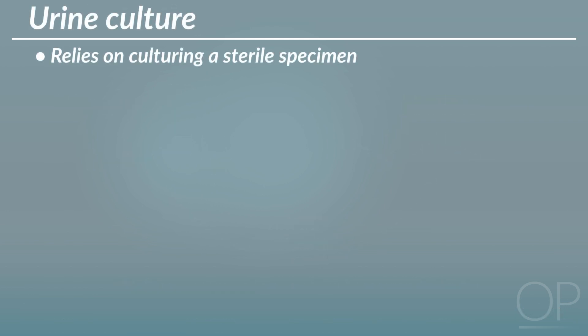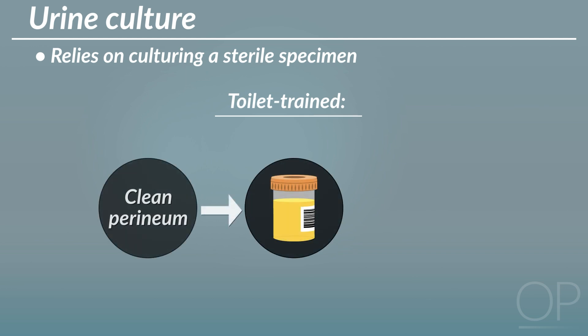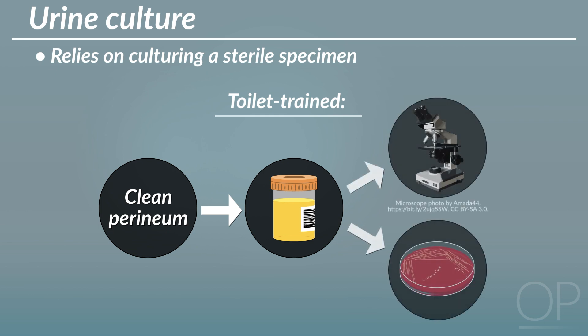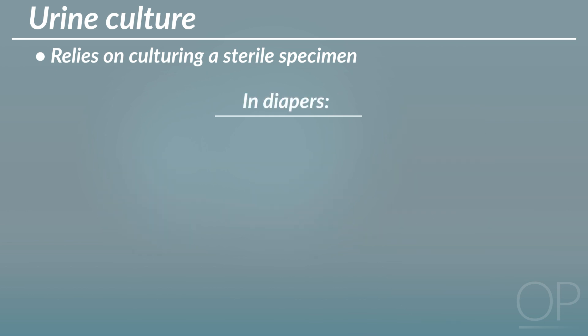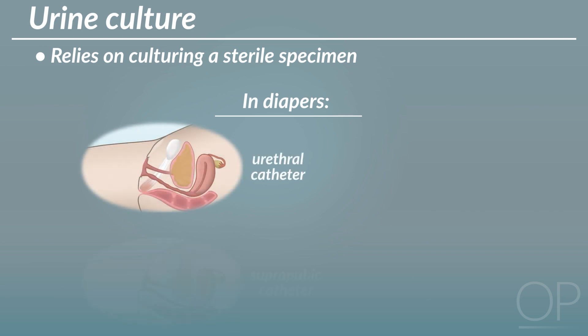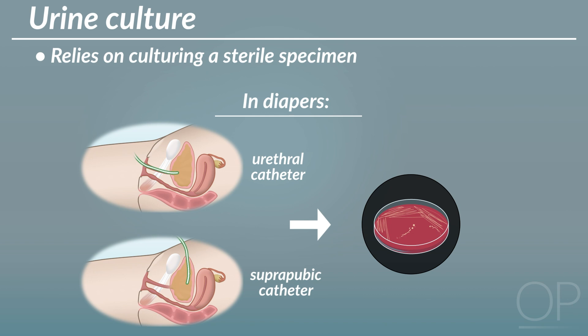Diagnosis relies on culturing a sterile specimen to ensure that the bacteria growing are not a contaminant from the skin. In a toilet-trained child, a clean-catch specimen may be obtained by cleaning the perineum prior to the child voiding into a sterile specimen cup. In infants who are still in diapers, only a urethral or suprapubic catheterized specimen should be sent for urine culture due to the high risk of contamination with organisms on the skin or from the GI tract.